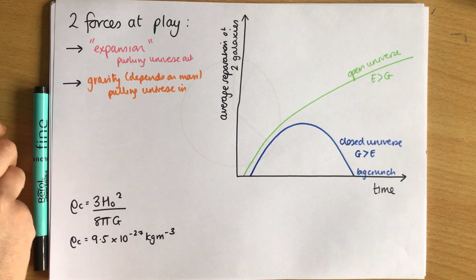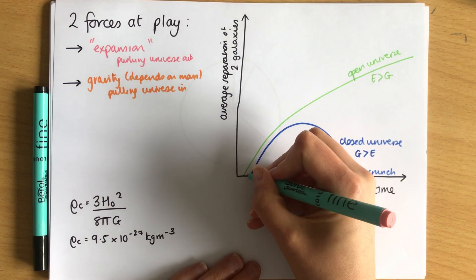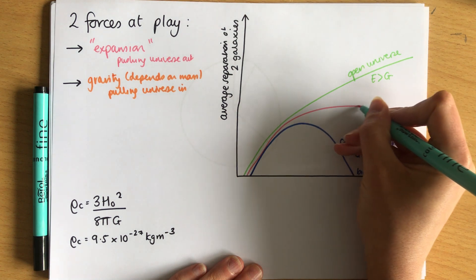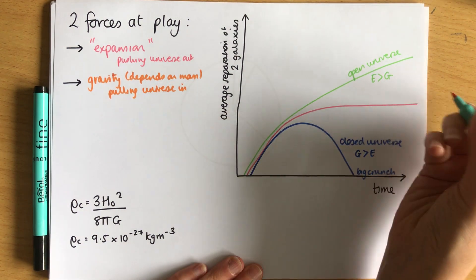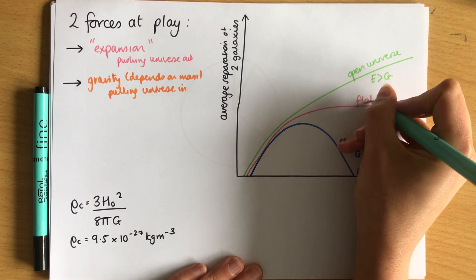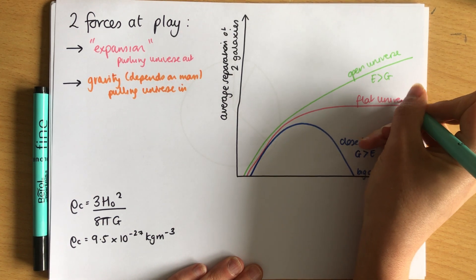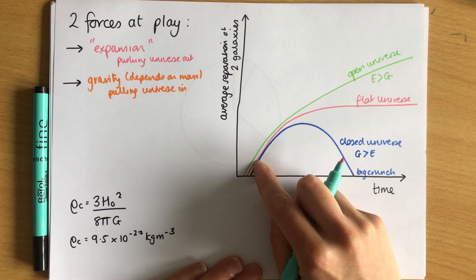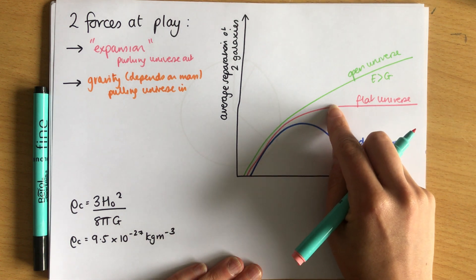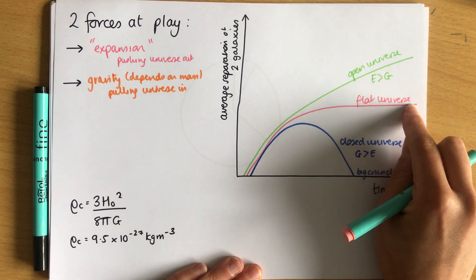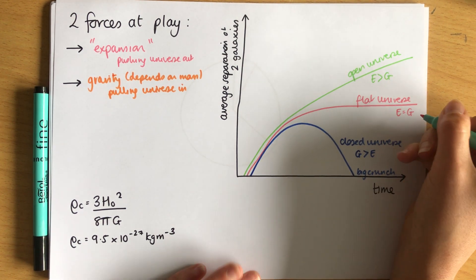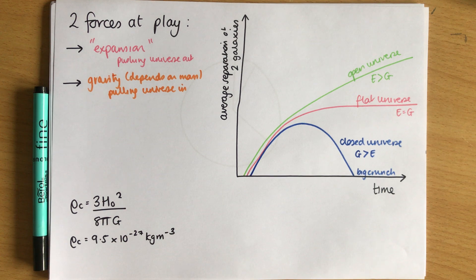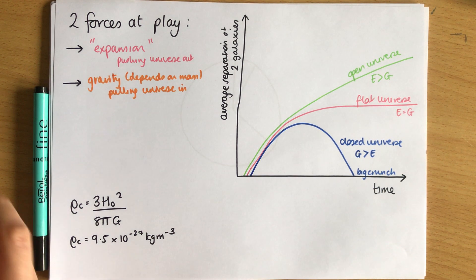The limiting case in between is called a flat universe. Here the universe keeps expanding, and just as we reach infinity it stops expanding. In this case, expansion and gravity exactly equal each other - it is the boundary condition between the open and closed universes.